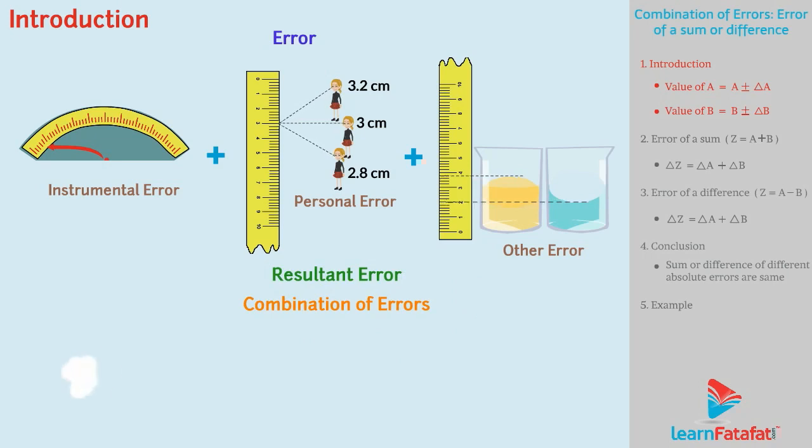Consider two physical quantities A and B. The value of these quantities are given as A ± ΔA and B ± ΔB, where ΔA and ΔB are the absolute errors.